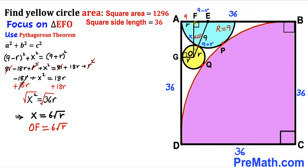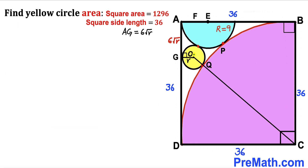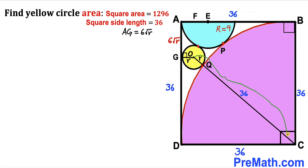Now I have connected center O with the center of the quarter circle C. QC is the radius of the quarter circle, which is 36, and the radius of the yellow circle is lowercase r. Therefore the total length OC = 36 + r.